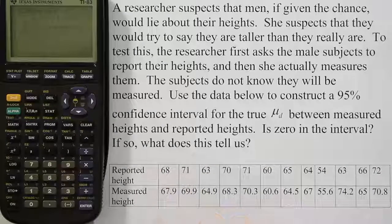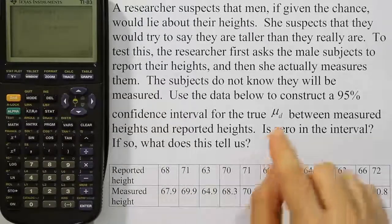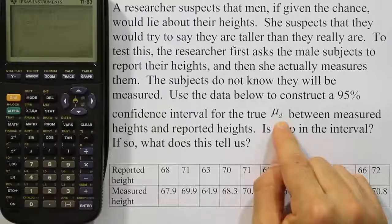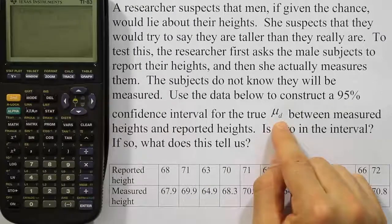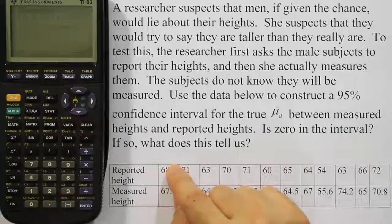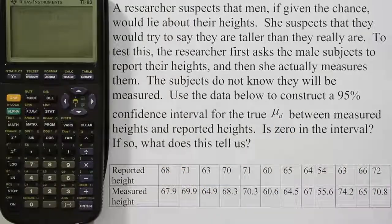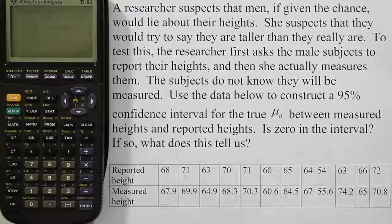Remember your calculator won't give you the interpretation, but we can figure that out ourselves. If the interval has zero in it, what it basically means is that there isn't a significant difference between the reported height and the measured heights. The reason why is because since zero is in that interval, it's a possible candidate for the true mean difference. And if zero was the true mean difference, it would basically be saying that there's no difference between the reported height and the measured height. So this data isn't strong enough to conclude that there is a difference.